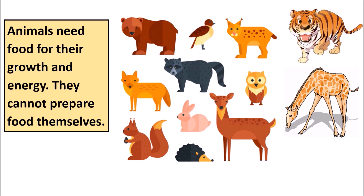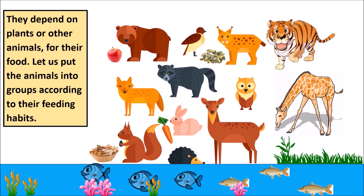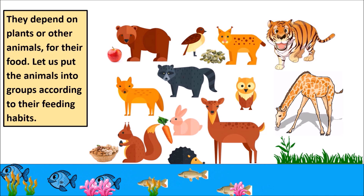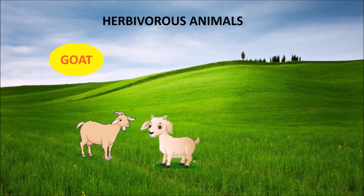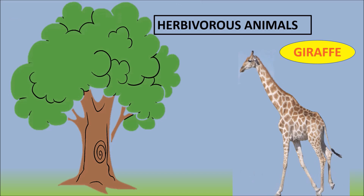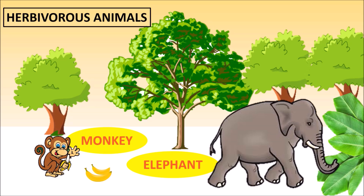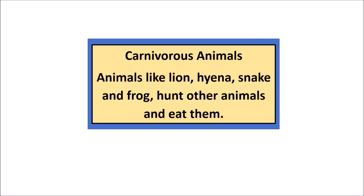Animals need food for their growth and energy. They cannot prepare food for themselves; they depend on plants or other animals for their food. Let us put animals into groups according to their feeding habits. Herbivorous animals — cow, goat, giraffe, monkey, and elephant — eat plants or other parts of a tree. Such animals are called herbivorous animals.